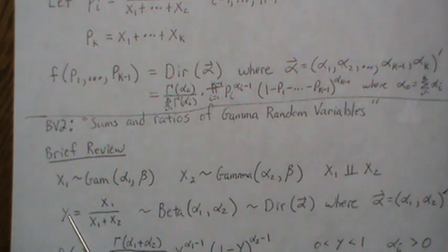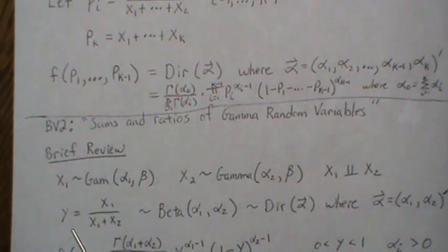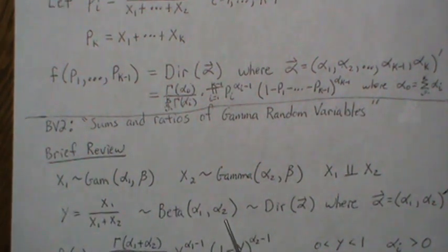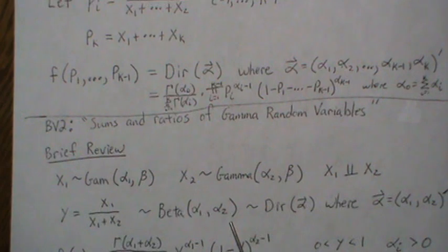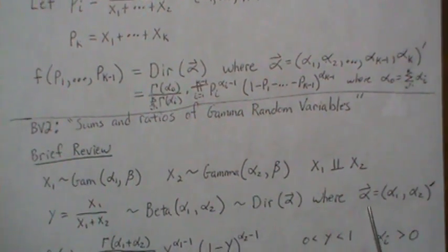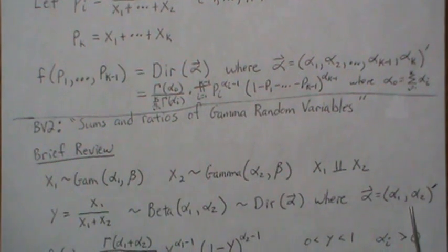And then we found the joint distribution of Y and Z and then integrated out Z. And then Y ended up being a beta with X1 and alpha 1 alpha 2, which is a Dirichlet distribution with alpha 1 and alpha 2.